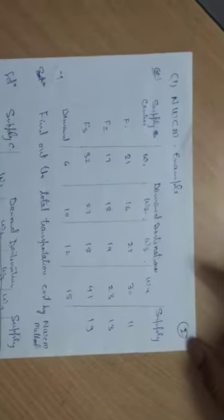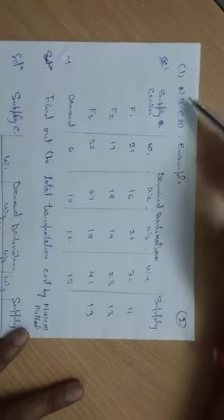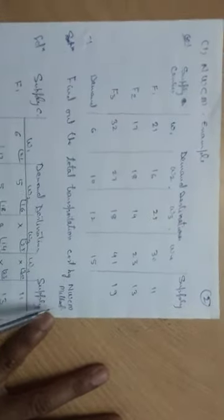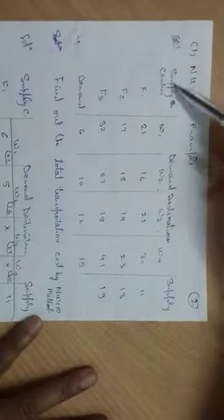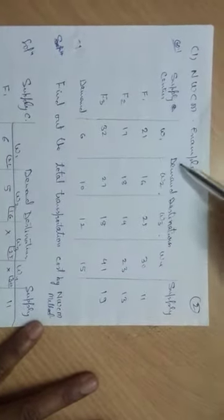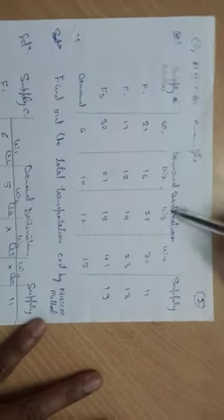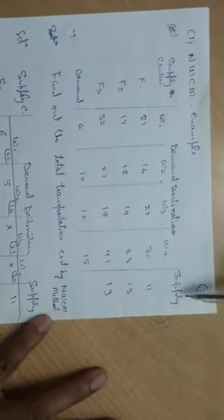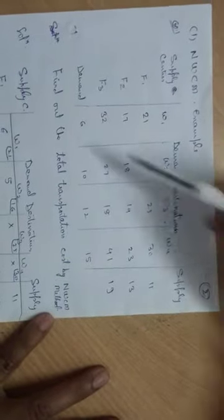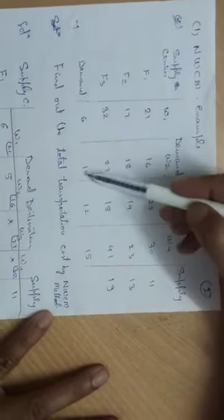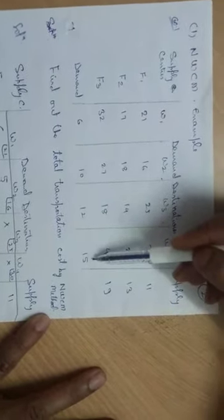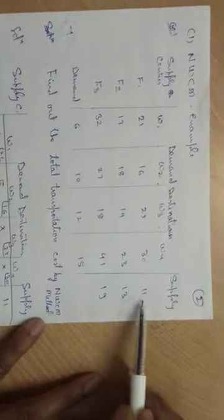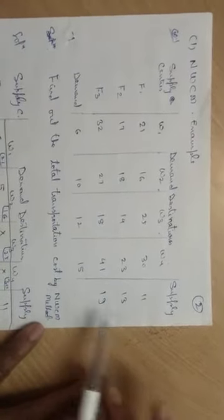Now we will start the first method, Northwest Corner Method. Find out the total transportation cost by NWCM method. Supply centers are given: F1, F2, F3, and demand destinations are also given: W1, W2, W3, W4. Demand and supply should always be equal. Let's verify: 6 plus 10 is 16, plus 12 is 28, plus 15 is 43. Same on the other side: 11 plus 13 is 24, plus 19 is 43. So demand and supply are equal.